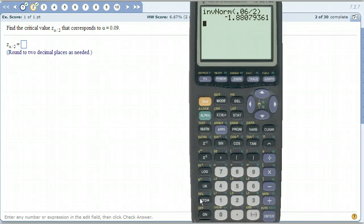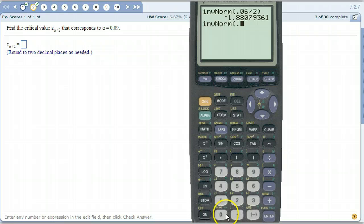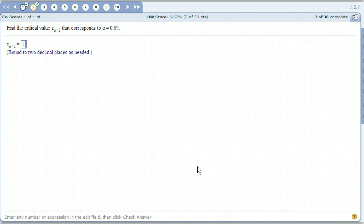0.09 this time. So inverse norm. This is alpha, so 0.09 and we divide it by 2. And there's our number. 1.695. That rounds to 1.70. So that's how you do these first couple of problems when we're talking about critical values and we have this Z alpha over 2 notation.